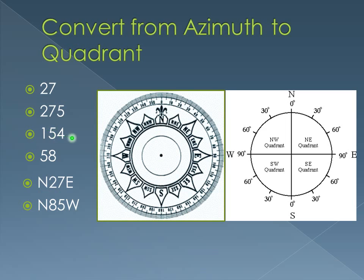The next one is 154. So 154 is about right in here — we're in our southeast quadrant. We know south is 180, and 154 is 26 degrees less than that, so we go south, and from south we go east 26 degrees. So the answer is south 26 east.